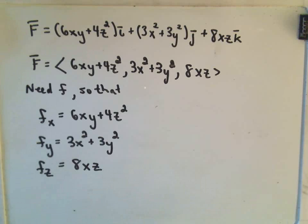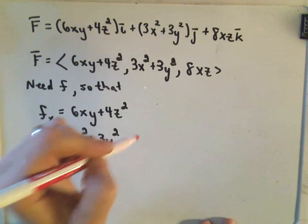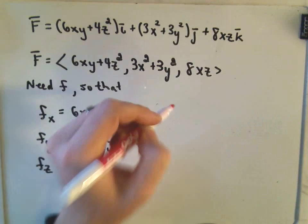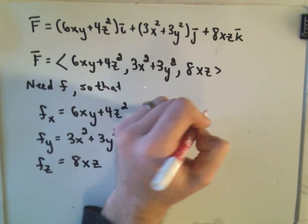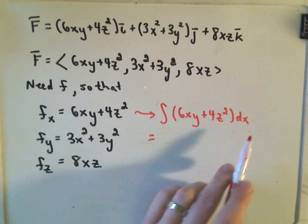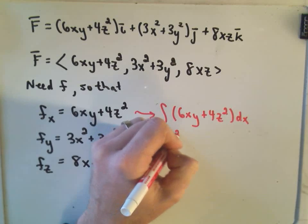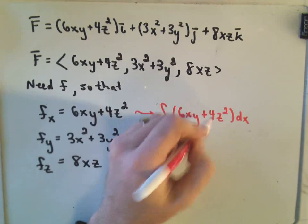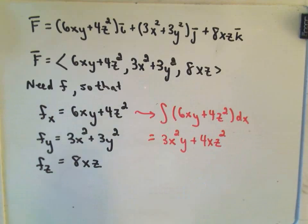You can start with any one of these three. I'm going to start with the partial with respect to x. Since we took the derivative of f with respect to x, if we integrate 6xy + 4z² with respect to x, remembering to treat y and z as constants, we'll get 3x²y and 4xz².